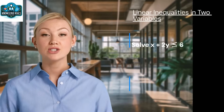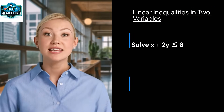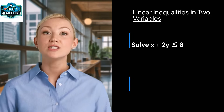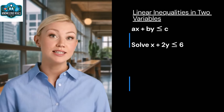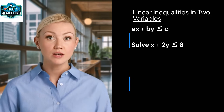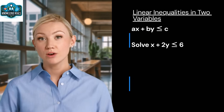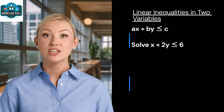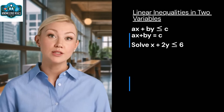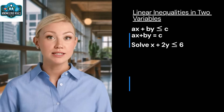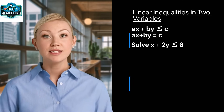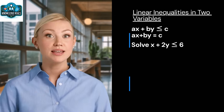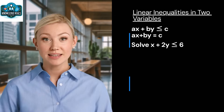In two variables, a linear inequality looks like ax + by ≤ c. To solve this, we first graph the corresponding equation ax + by = c, which is a straight line. This line divides the plane into two half-planes.